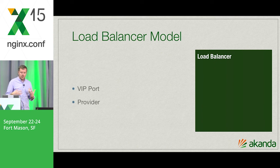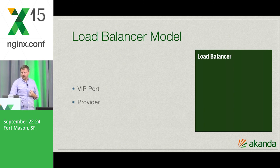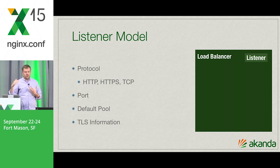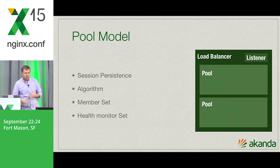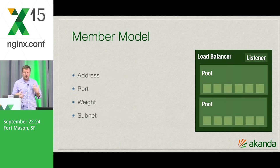Within the Neutron model you have the load balancer, which is a top-level object that holds the VIP port in Neutron — that's the external address available. You can do setups where it's one-arm mode or two-arm mode. Within that container you have a listener, which says here's what we're listening on — what protocol, what port. This is analogous to the server line within an Nginx config file. Then within that you have the pools, which is more like what the upstream block would be in an Nginx config — the backend is where you choose your session persistence, the load balancing algorithm, and then declare the member sets. Members themselves are fairly lightweight: address, port, weight, and subnet.